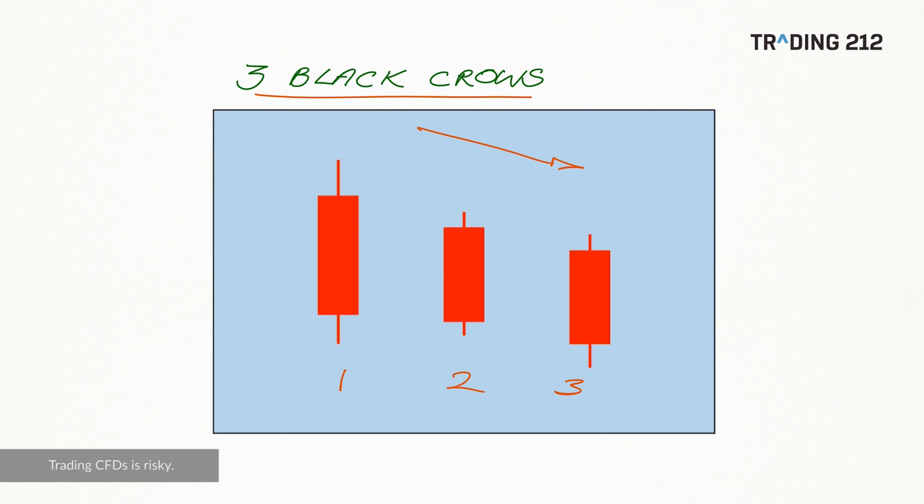Now of course, if we were dealing with black and white candlesticks as these charts would have been as originally devised, then this would appear as three black candlesticks in a row, which is where the name for the pattern comes from.